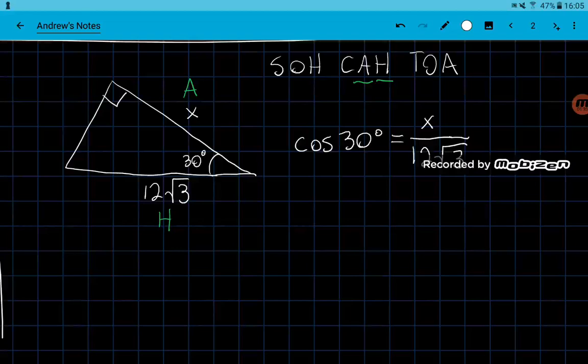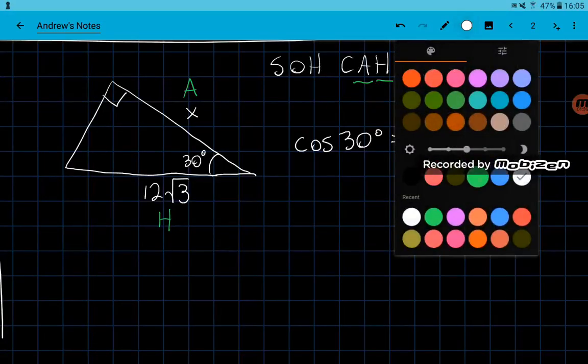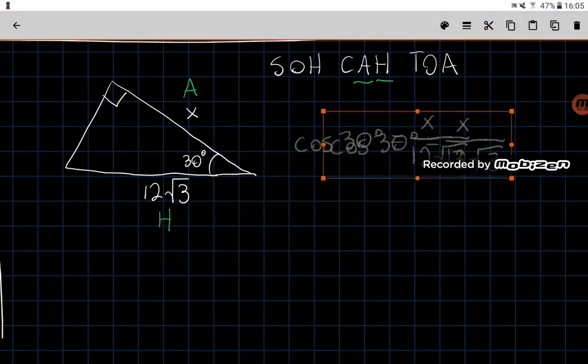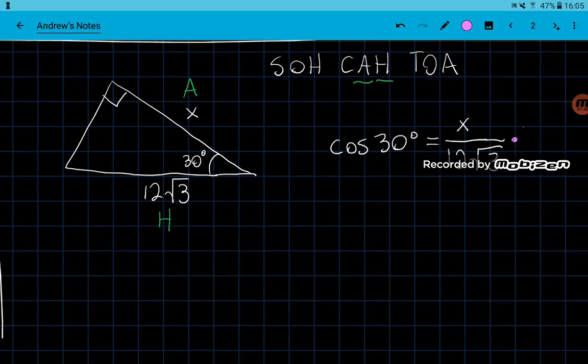Now all we've got to do now is solve for our X value. And to do that, we can just multiply both sides by the denominator. So we go ahead and multiply this by 12 square root of 3 and 12 square root of 3.